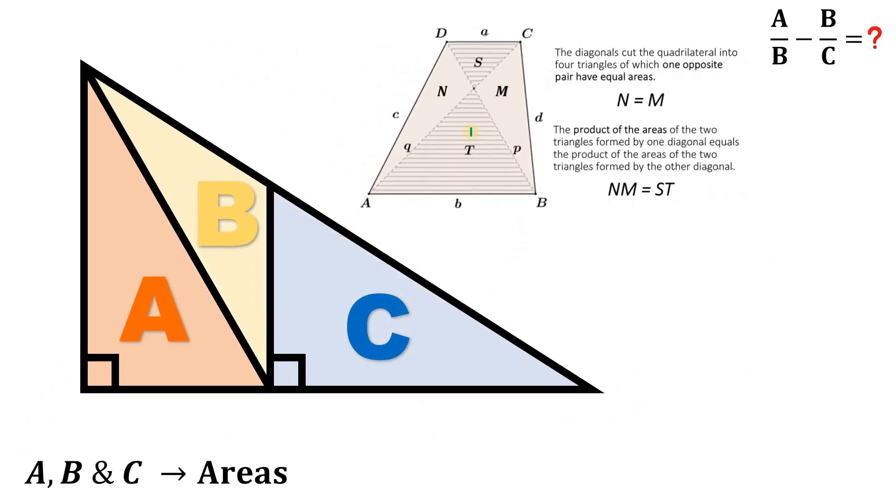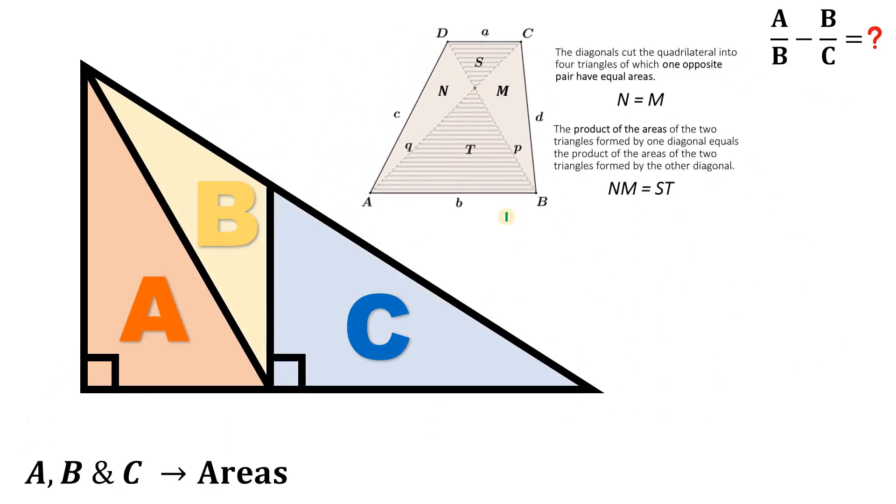So let's do that. So to create a trapezoid, what we're going to do is to connect this point to this point like this. Now, let's set aside this area A for a while and take note of this region, this triangle, with an area of B square units. If this triangle have an area of B square units, this triangle also have an area of B square units using this concept.